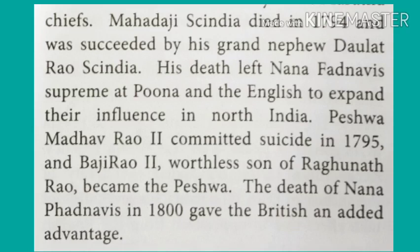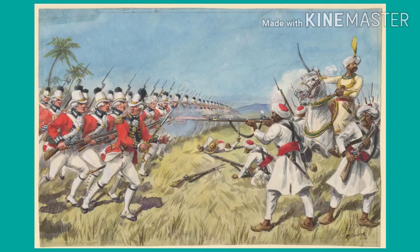Peshwa Madhav Rao II committed suicide in 1795 and Baji Rao II, the worthless son of Raghunath Rao, became the Peshwa. The death of Nana Fadnavis in 1800 gave the British an added advantage.